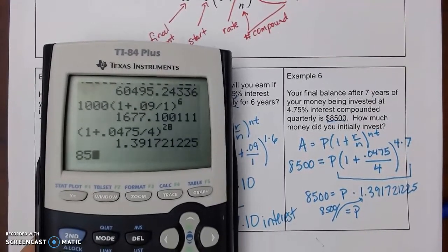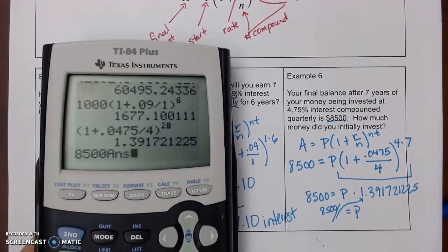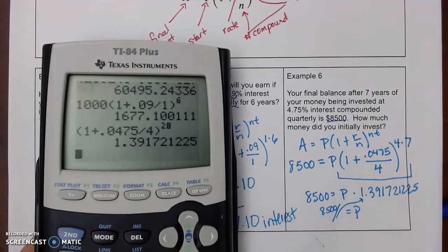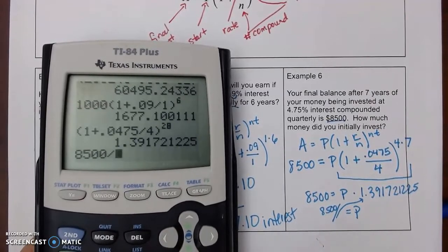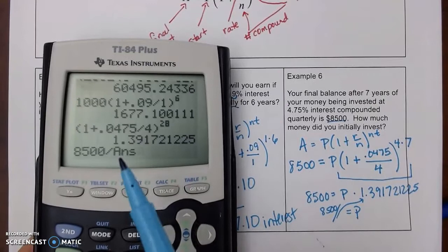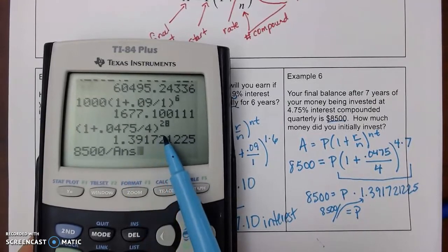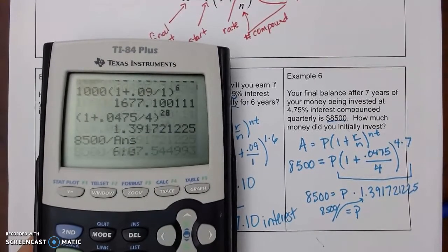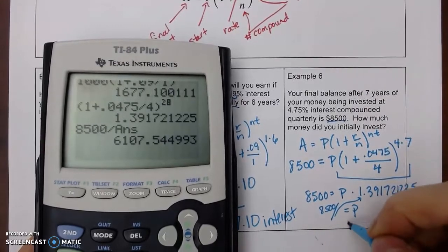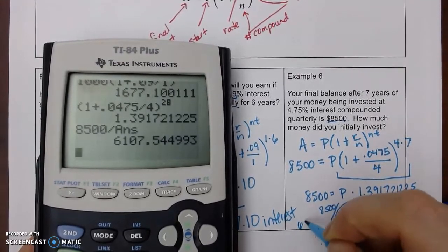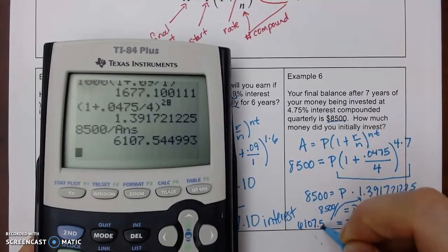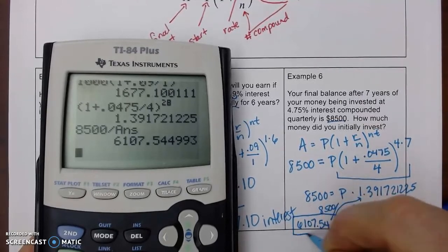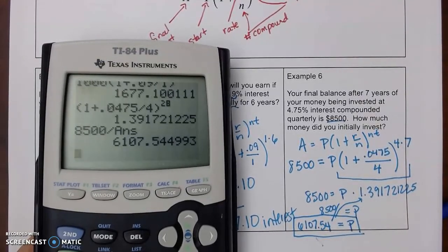And so, I can do 8,500 divided by, if I hit answer on my calculator, it's going to put that big, long decimal in here. So, you'll want to do that. If you don't, your answer will be off and that's why. So, 6107.54. That would be how much money we started with.